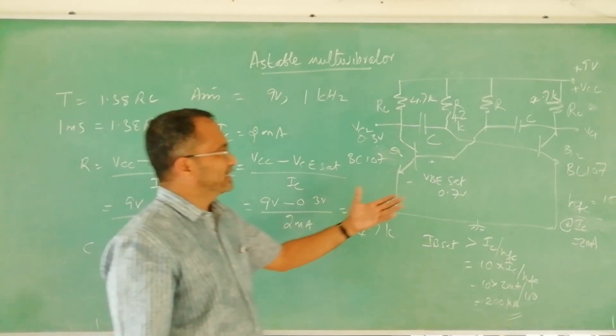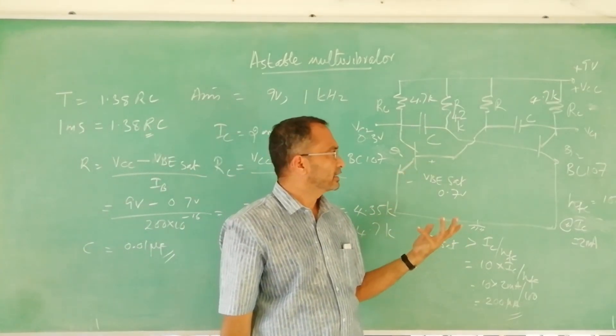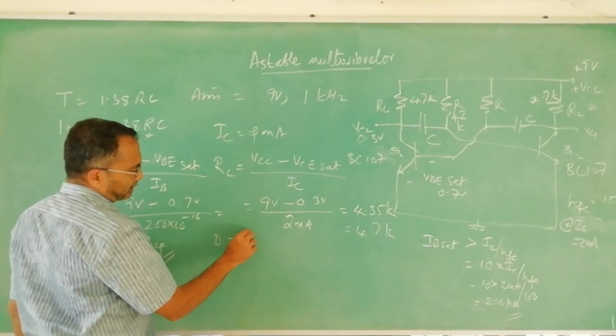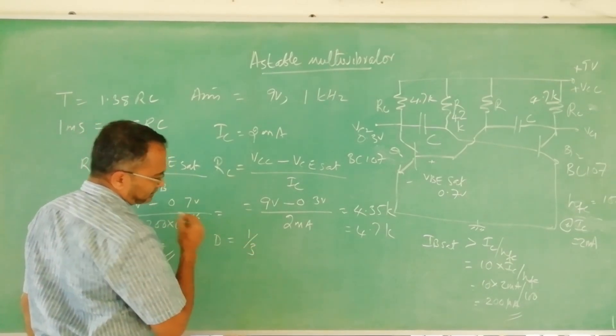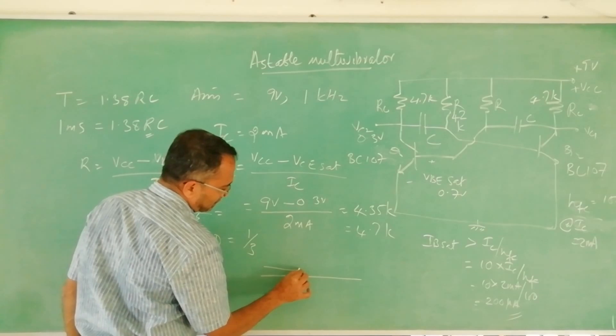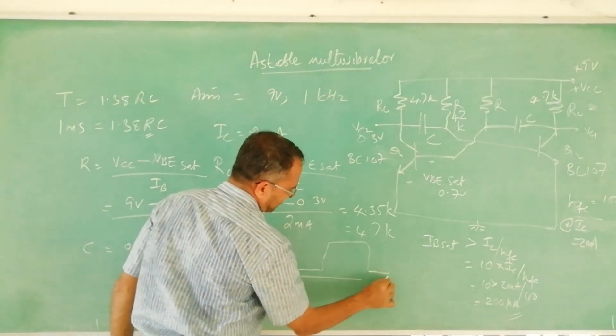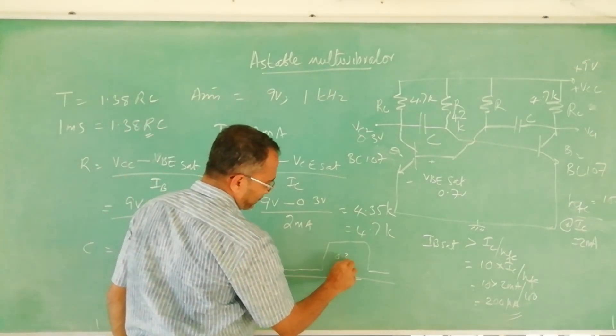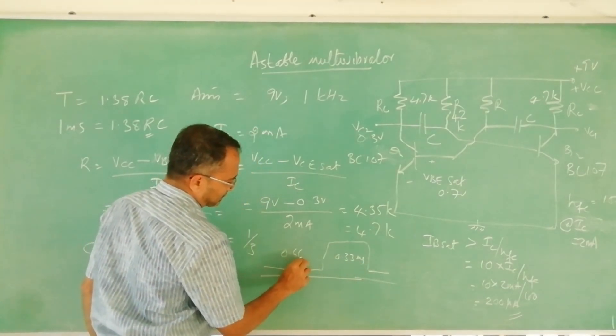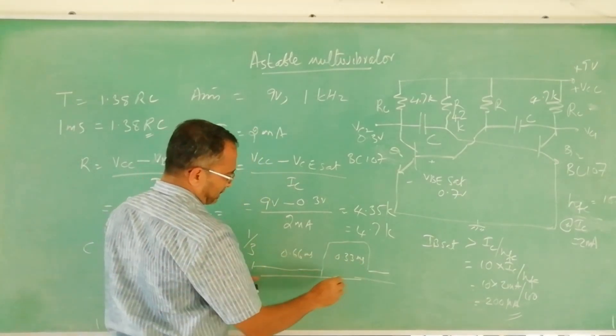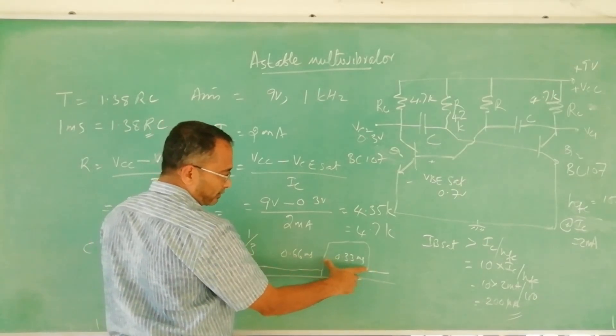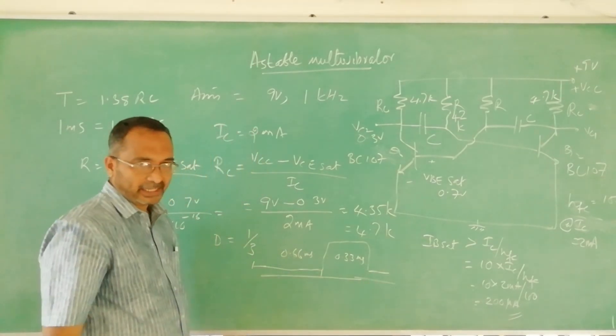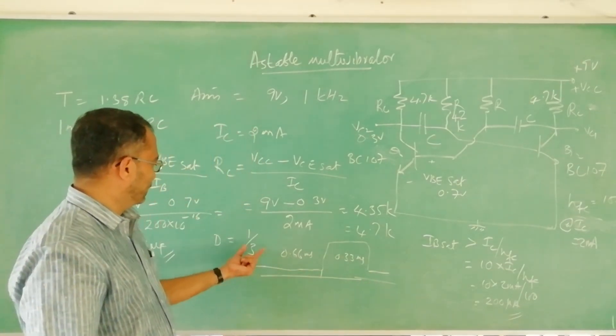If you want this designed with different duty cycle, not one by two, for example one by three, we want to get the output like this. For example one millisecond, this will be about 0.33 millisecond. This is T on, this is total T. T on by T that is duty cycle 1 by 3.